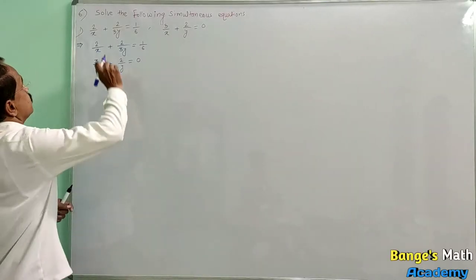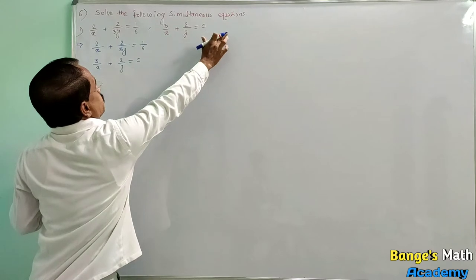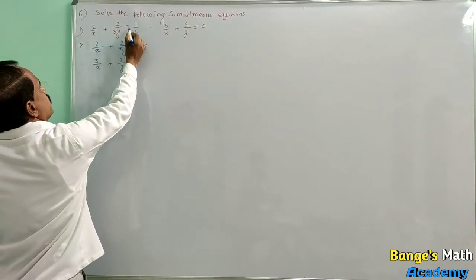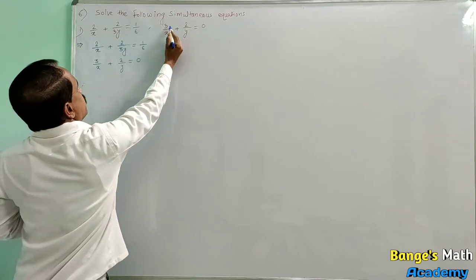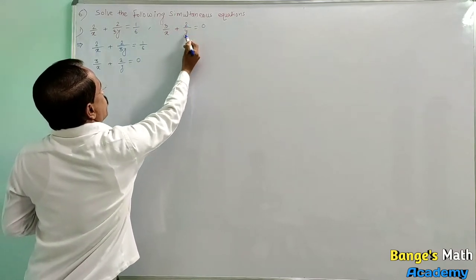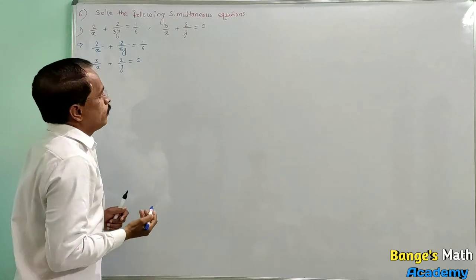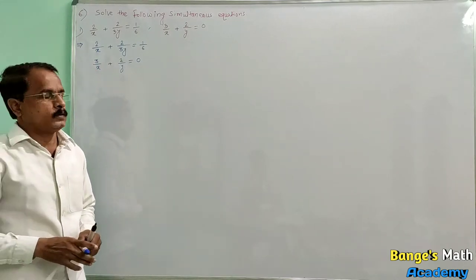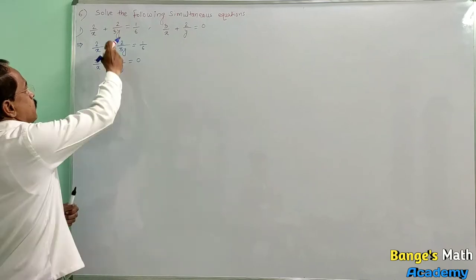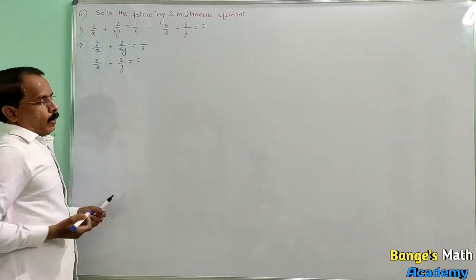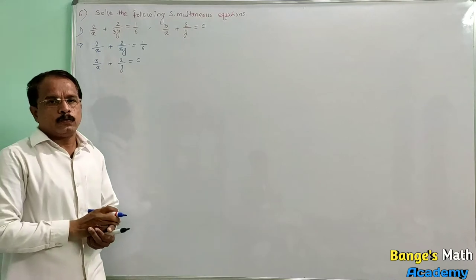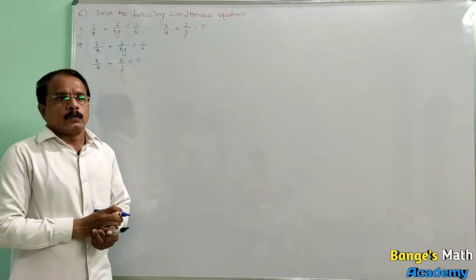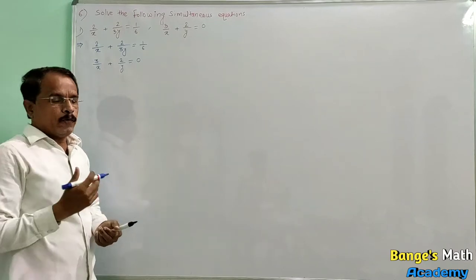Question 6: Solve the following simultaneous equations. First example: 2 upon x plus 2 upon 3y is equal to 1 upon 6, and 3 upon x plus 2 upon y is equal to 0. We have to find the solutions of this simultaneous equation. First of all, write down the given equations and convert them into linear equations by substituting new variables.